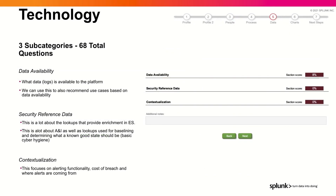Then we get to the last part, which is the longest section — three subcategories and 68 total questions. This first section is the data availability section: what data is actually available to the platform — do you have firewall logs? Are they normalized as CIM? And then the security reference section is about the different lookups inside of Enterprise Security that provide all that enrichment — this is where all the magic happens within Enterprise Security. And then in terms of contextualization — how are you actually using the alerting? What's the actual cost of a breach? Where are those alerts coming from?